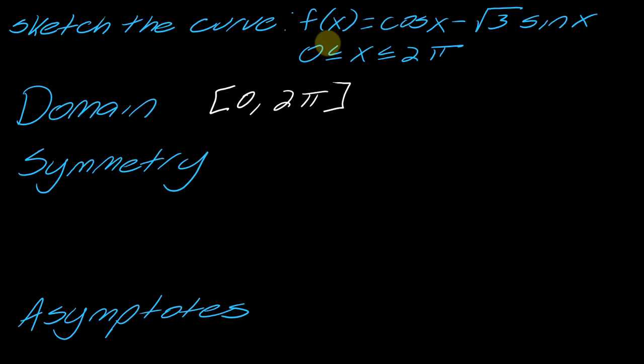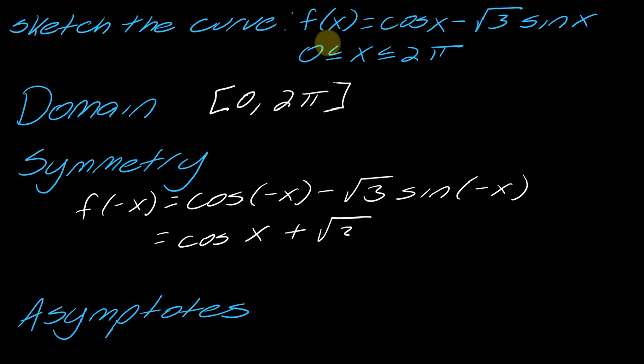Now, symmetry. You might have to look at a list of trig identities just to remember how to actually evaluate this. But what this will end up equaling, if you just look up some trig identities, you're going to get cos(x) + √3·sin(x). So there is none. And then finally, asymptotes. There are also going to be none of these, so we're good to go.